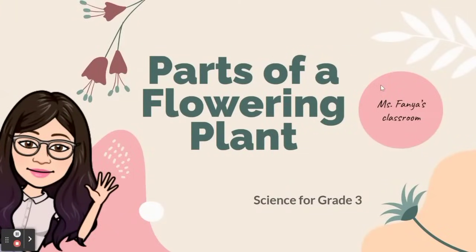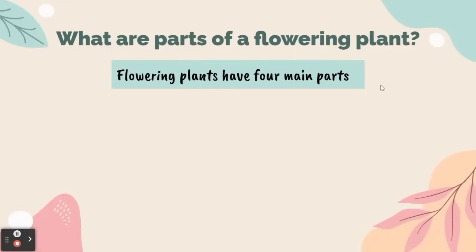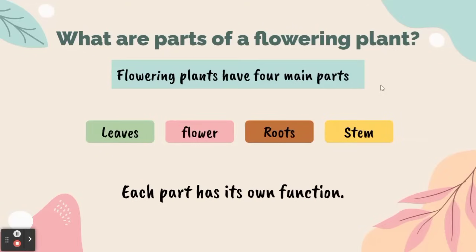Now let's learn about the parts of a flowering plant. What are the parts of a flowering plant? A flowering plant has four main parts: leaf, flower, roots, and stem. Each part has its own function. Let's talk about them one by one.